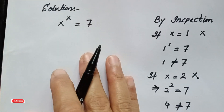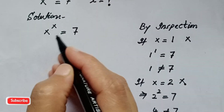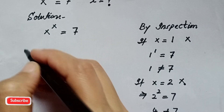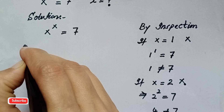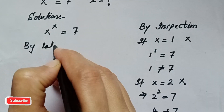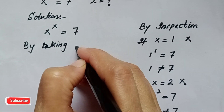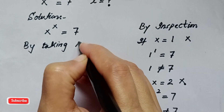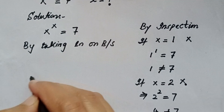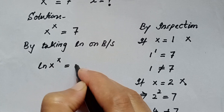So let's find the solution by taking ln on both sides. Taking the natural logarithm of both sides gives us: ln(x^x) = ln 7.